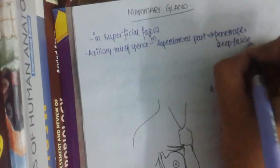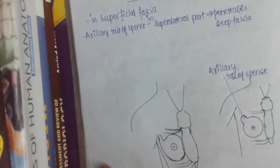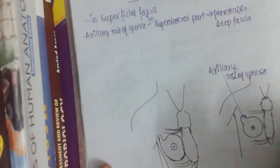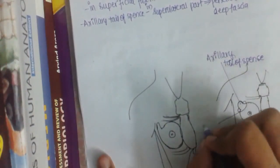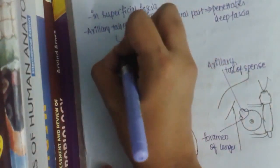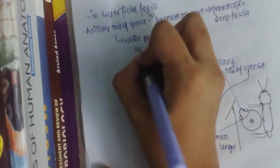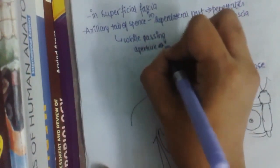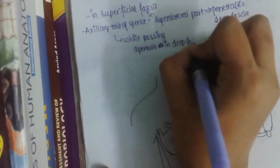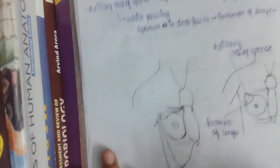The rest of the mammary gland is in the superficial fascia. Whenever the axillary tail of Spence passes through the deep fascia, there is an aperture in the deep fascia. This aperture is called the foramen of Spence, also known as the foramen of Langer.